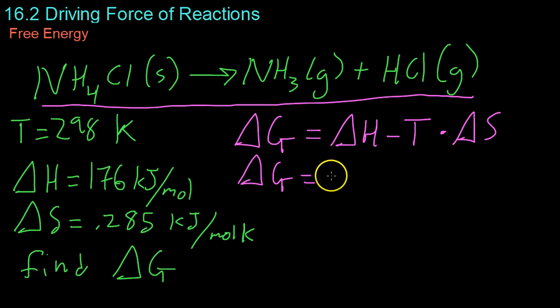So, delta G equals 176 minus 298 times 0.285. And what you end up with is a delta G of 91 kilojoules per mole. In other words, this reaction is not spontaneous because delta G is greater than zero.